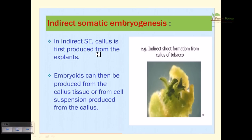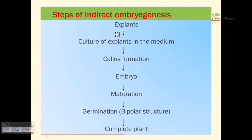In indirect somatic embryogenesis, callus is first produced from the explant, and then embryos are produced from the callus tissue or from cell suspension derived from the callus. The cells in this case are not destined to produce embryos, so they must be induced using inducing agents like hormones — primarily 2,4-D, IBA, sometimes NAA — along with cytokinins. The timing of hormones is very important. After embryo production, maturation and germination lead to the complete plant.